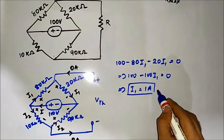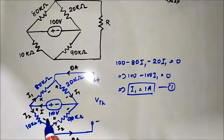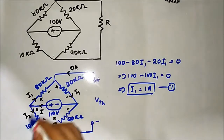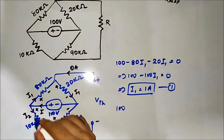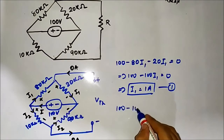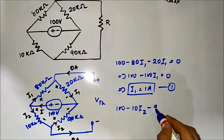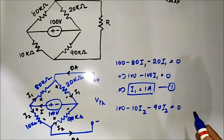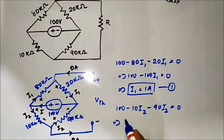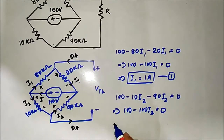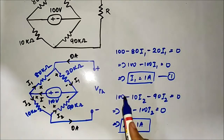Next, we apply KVL in the second closed path. Starting: 100 minus 10·I2 minus 90·I2 equals zero. That implies 100 minus 100·I2 equals zero, so I2 equals 1 ampere. Therefore I1 equals 1 ampere and I2 equals 1 ampere.